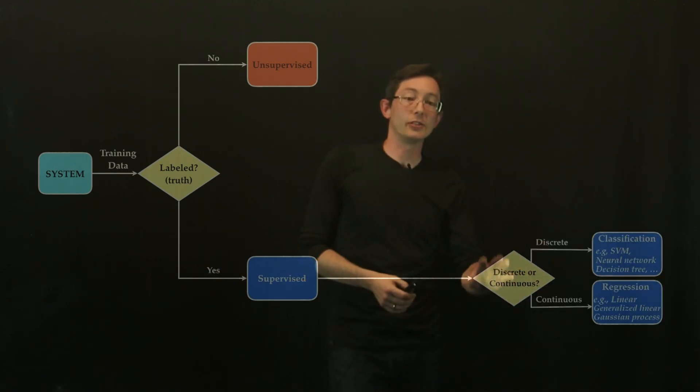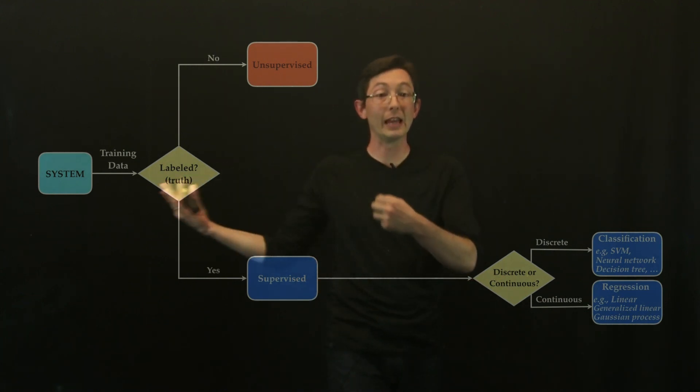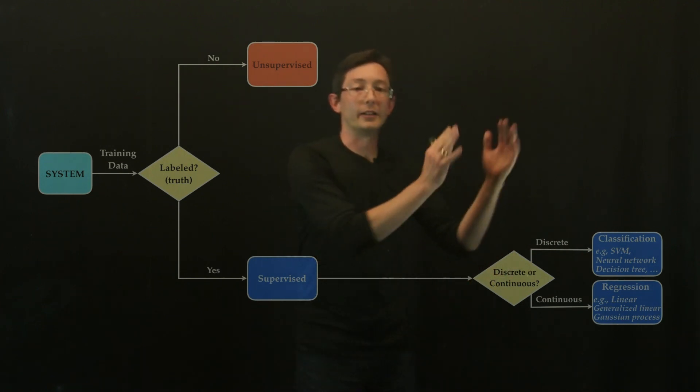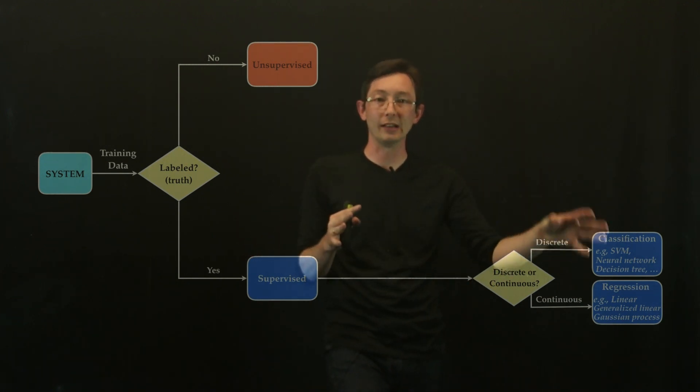And then you have to ask, is your data discrete or continuous or are the outcomes or the things, are the labels discrete or continuous? So in the case of discrete, dogs and cats are two distinct categories, that's discrete labels.